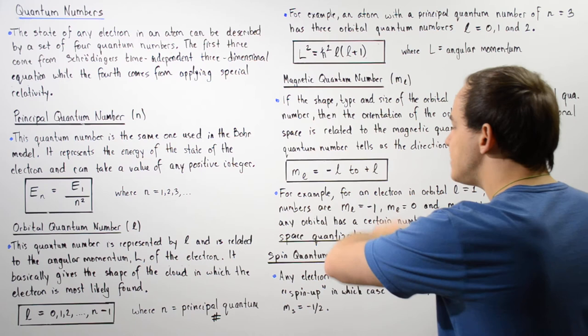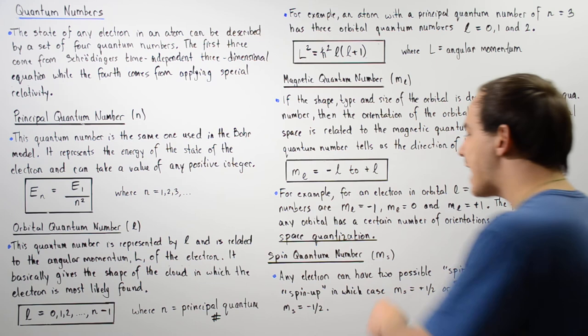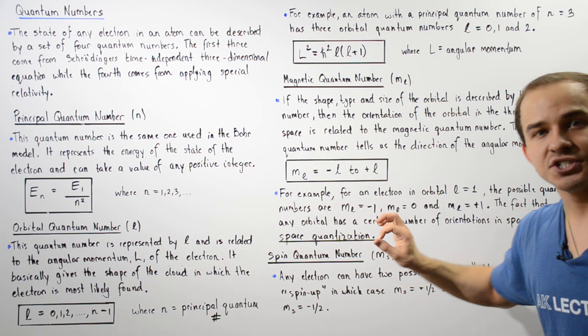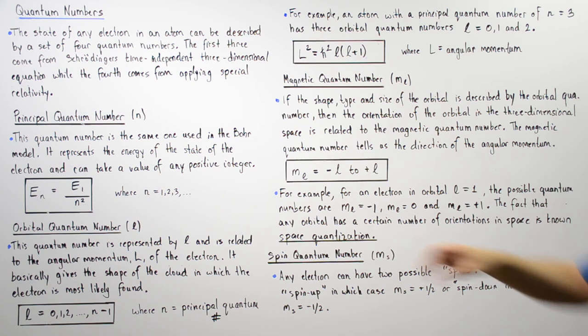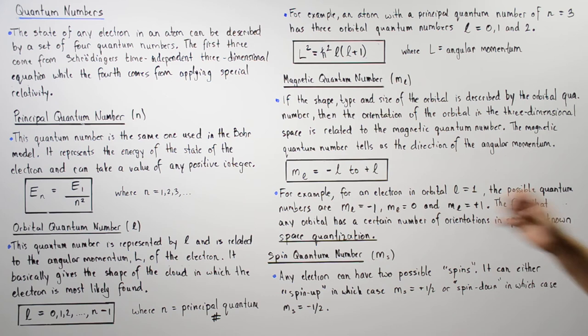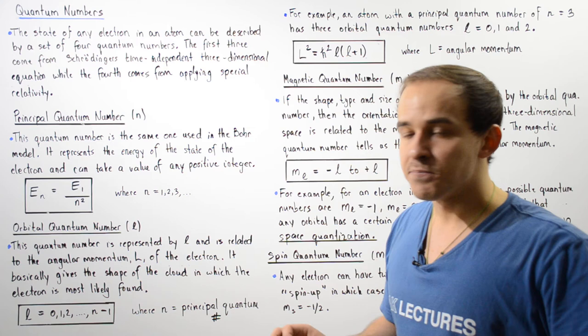The last and fourth quantum number is known as the spin quantum number, given by ms. Any electron within any given orbit can have one of two possible spins. It can either have a spin up, in which case ms equals positive one-half, or it can have a spin down, in which case ms equals negative one-half.